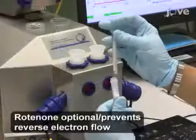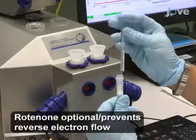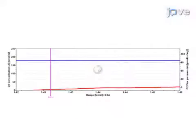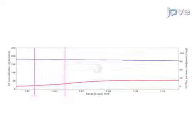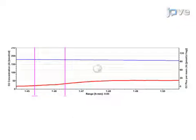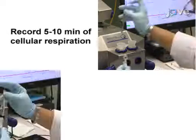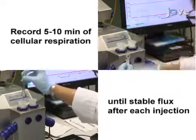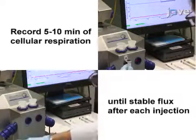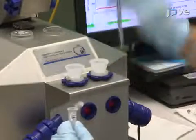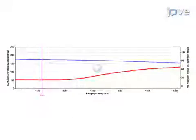Next, use a syringe to inject 2 microliters of rotenone through the titanium injection port into the oxygraph chamber and record the cellular respiration for another 5 to 10 minutes. When a stable oxygen flux signal is achieved, inject 20 microliters of 1 molar succinate, followed by 10 microliters of 0.5 molar ADP. Then inject 2 volumes of 2 microliters of 2 millimolar digitonin and record the cellular respiration for 2 to 5 minutes after each injection, followed by